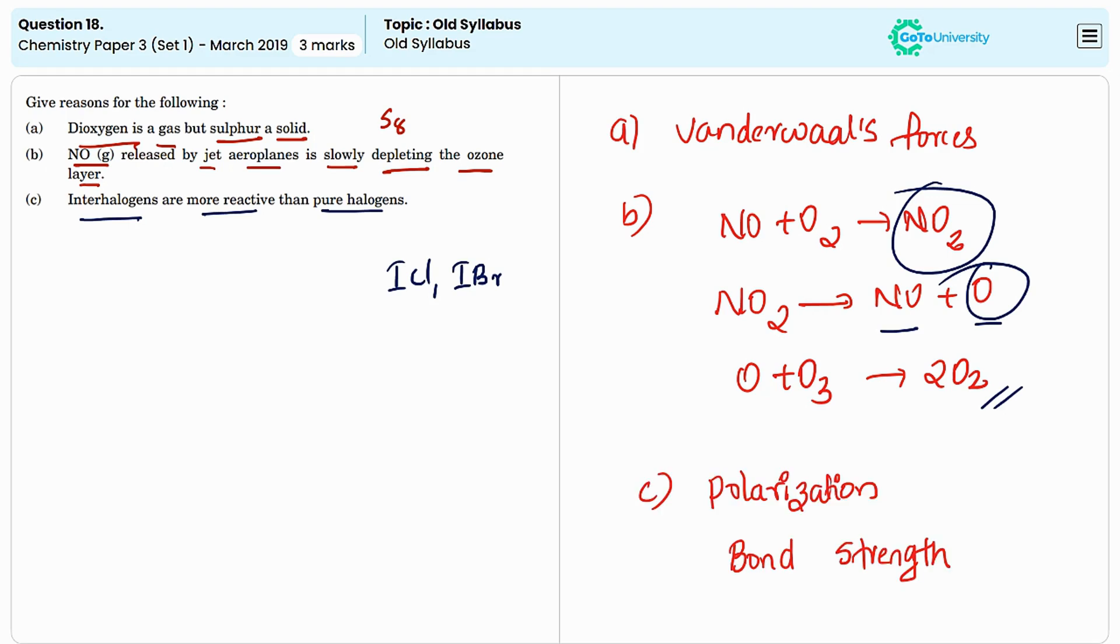The first one is polarization effect. In interhalogen compounds, the halogen atoms have differing electronegativities. For example, in ICl, iodine is less electronegative than chlorine. So, they will lead to a significant polarization of the iodine-chlorine bond. And it makes the bond more polar and weakening it. This polarization makes the molecule more reactive in certain chemical reactions.